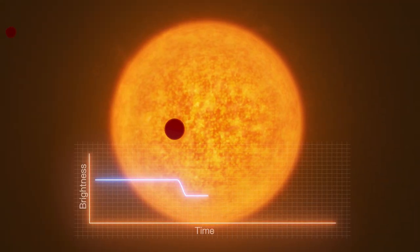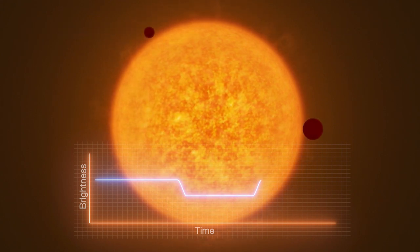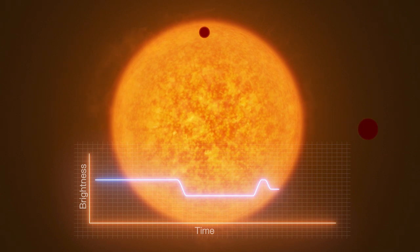Additional smaller dips in light levels, just before or after the transit, can indicate a satellite, an exomoon.